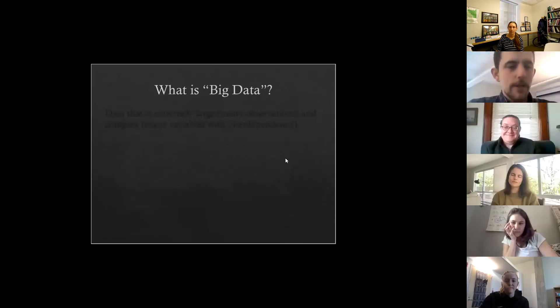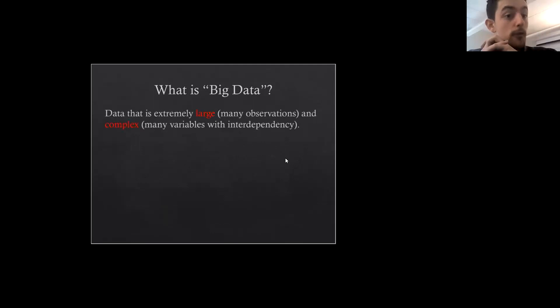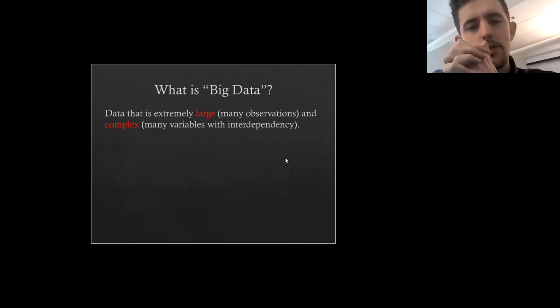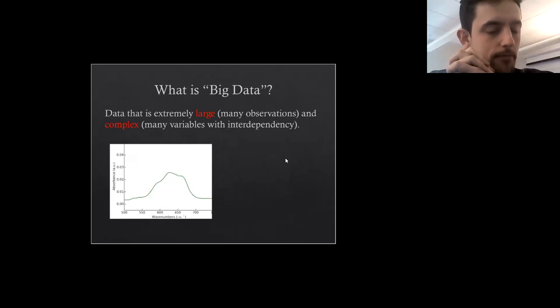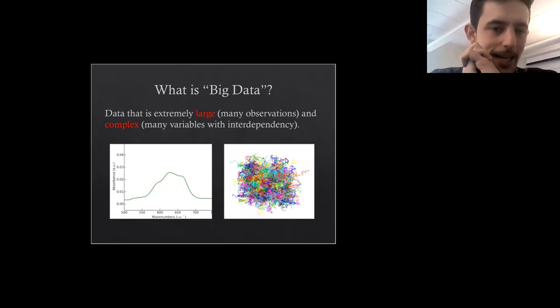Before we go any further, we have to define what big data is. Simply put, it is data that is extremely large, meaning it has many observations, and it's also very complex, meaning it has many variables with interdependency. To illustrate the difference between a typical data set and a big data set, let's consider first a graph of UV-Vis data. Here we only have two dimensions, and identifying and defining trends is fairly easy with this kind of graph. On the other hand, this is an illustration of a big data set. Here we have a vast number of variables, and more notably, there's interdependency between them. Interdependency means that trends can influence other trends and they're no longer isolated from each other. As a result, the once easy task of defining, let alone identifying trends, is now much more difficult. The looming question is, how do we perform an analysis on a data set like this?